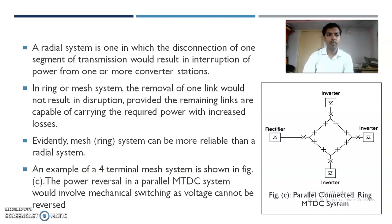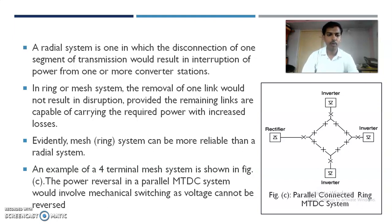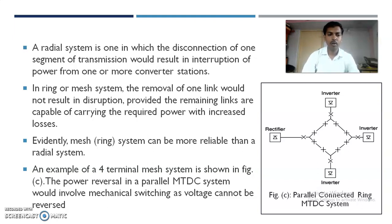In a ring or mesh system, the removal of one link would not result in disruption, provided the remaining links are capable of carrying the required power, albeit with increased losses. Evidently, a mesh or ring system is more reliable than a radial system. An example of a four-terminal mesh system is shown in figure C. Power reversal in a parallel three-terminal MTDC system would involve mechanical switching, as voltage cannot be reversed.